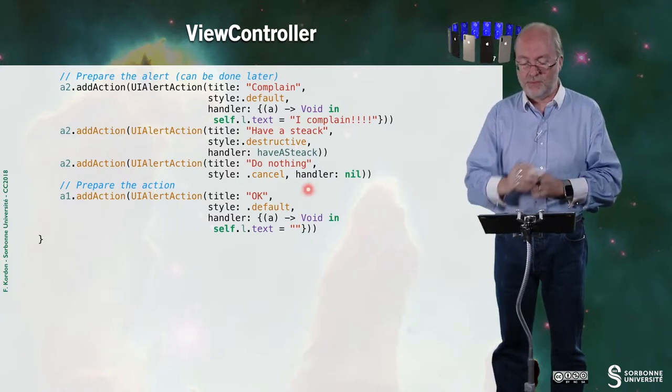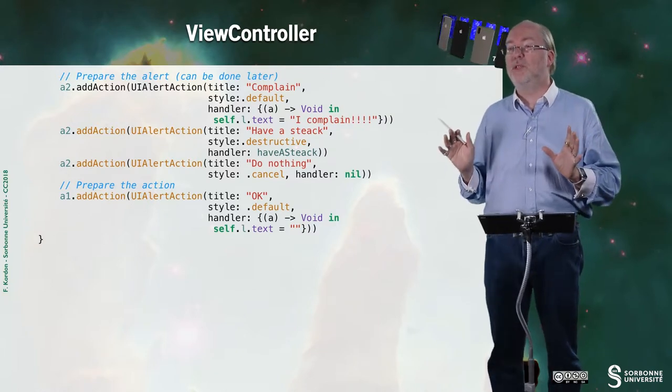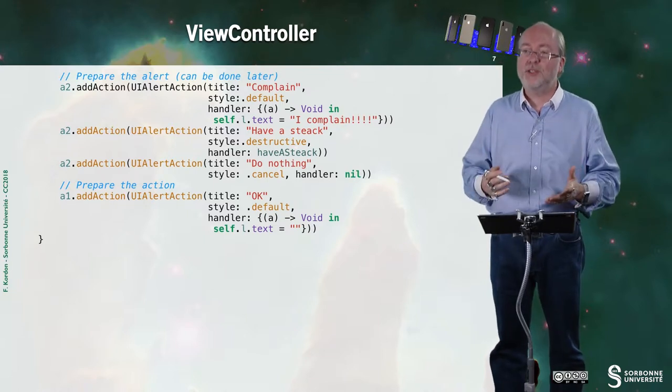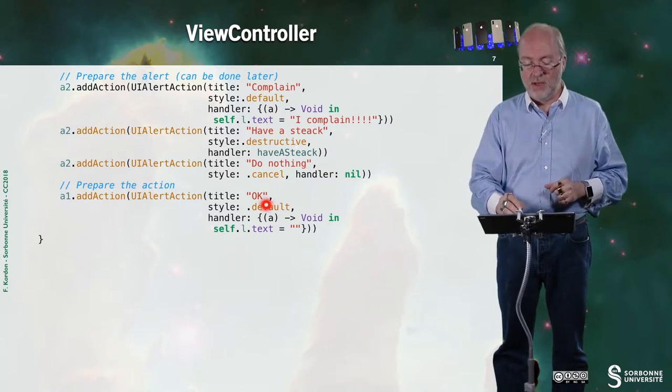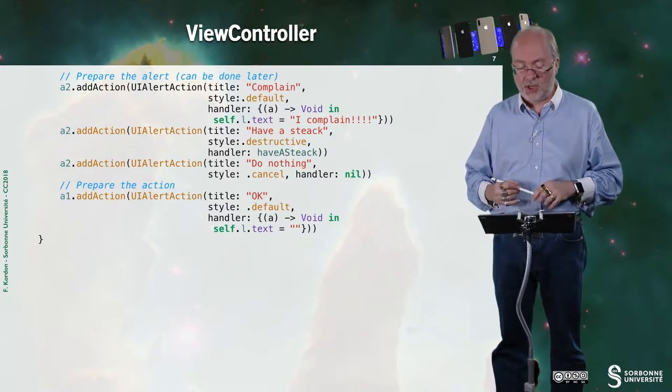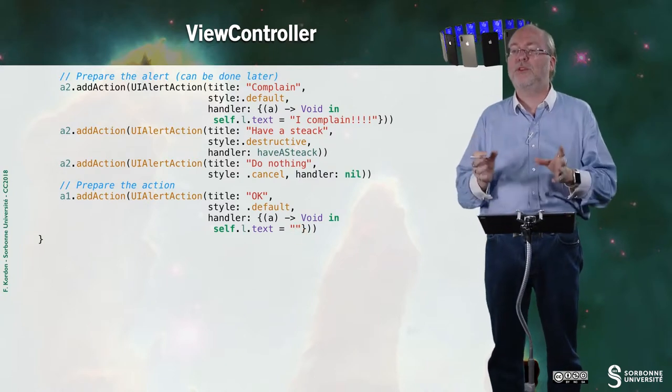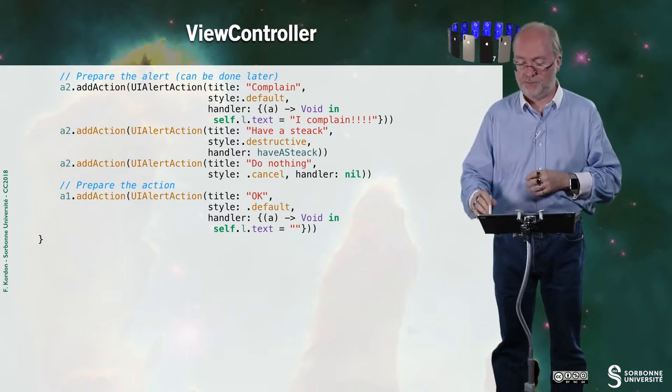And here I have a third action. But I say I don't want any action associated to it. So if I press this choice, then I call nil. So it means I call nothing, and it's normal because I say do nothing. And here this is the same with my UIAlertAction. Here I just put nothing to the label - I just delete the values that were in the label.